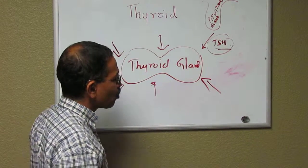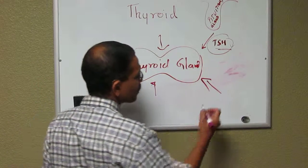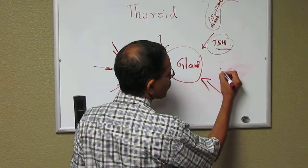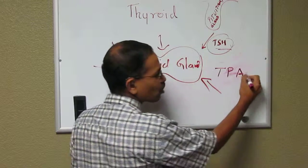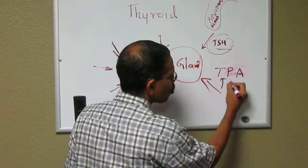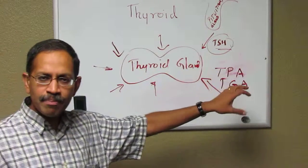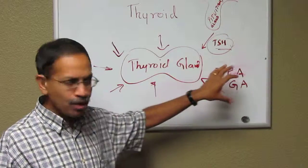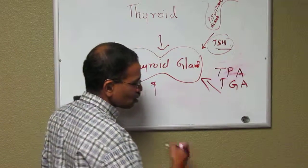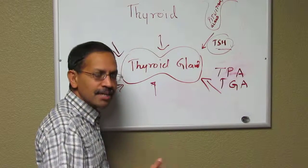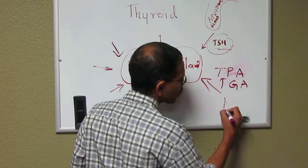There are two common antibodies found for low thyroid activity. They are called thyroid peroxidase antibody and thyroglobulin antibodies. These are simple blood tests which we can do to find out whether your thyroid gland is under attack.